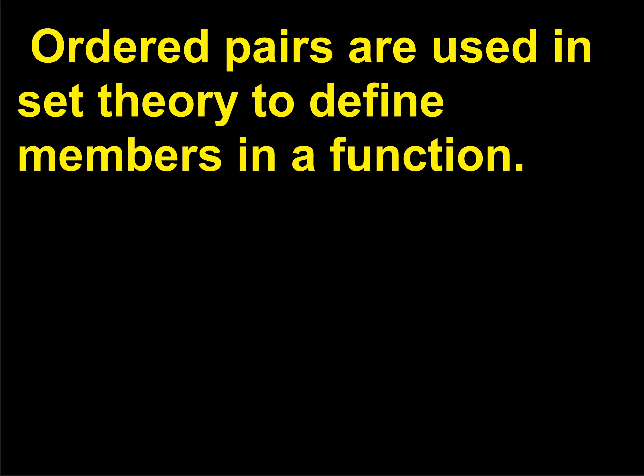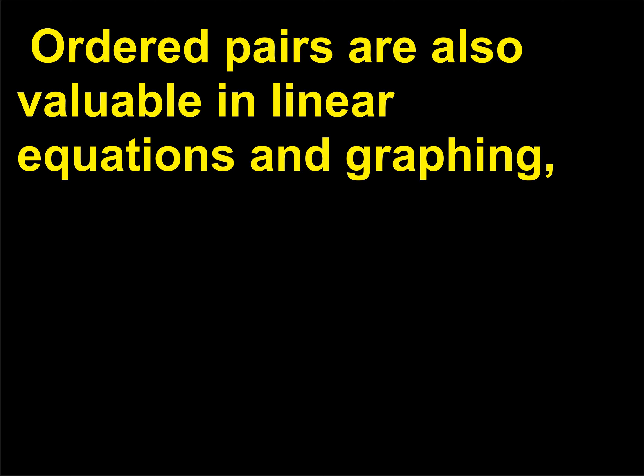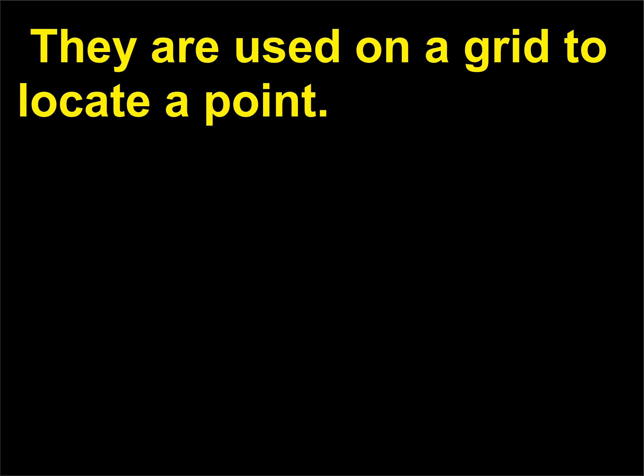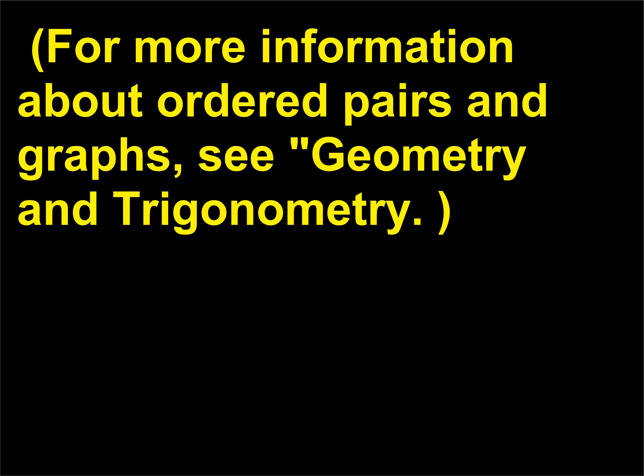Ordered pairs are used in set theory to define members in a function. They are also valuable in linear equations and graphing, in which the x-coordinate is the first number and the y-coordinate is the second number, or (x, y). They are used on a grid to locate a point. For more information about ordered pairs and graphs, see geometry and trigonometry.